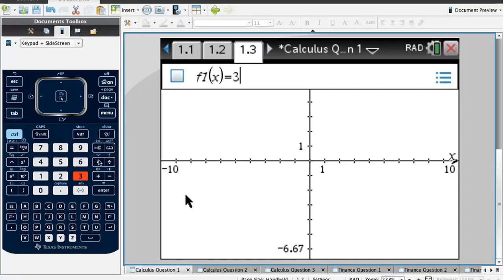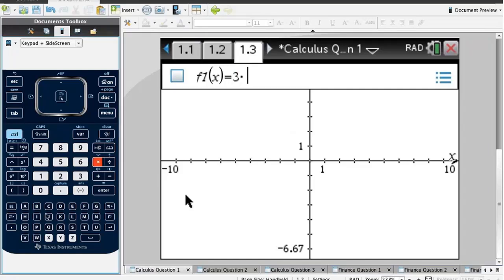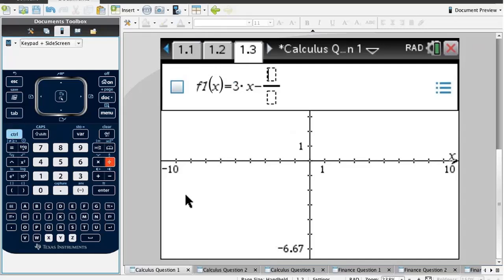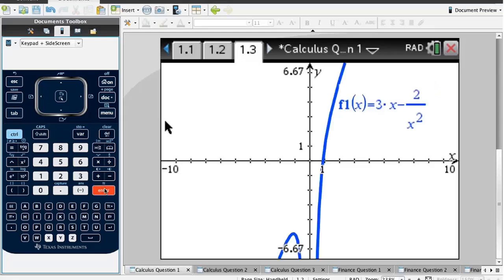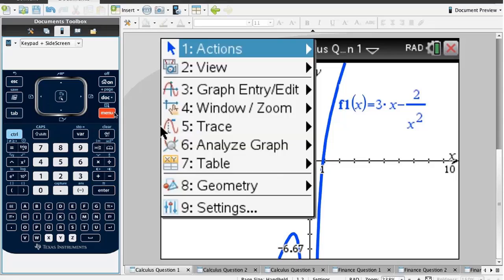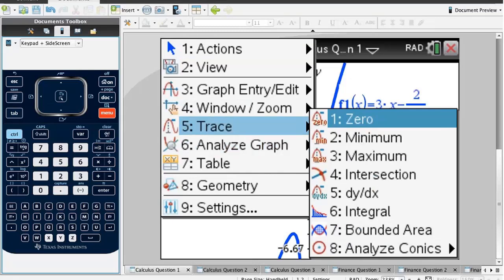The first way is to graph the function and find the point where the derivative is 35. We can open a graphing document and graph our function: 3 times x minus 2 over x squared. So I want to know when the gradient is 35. I'm going to press menu, then analyze graph, and pick dy dx.